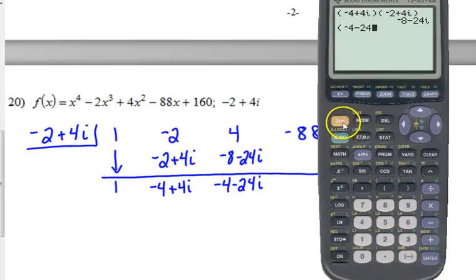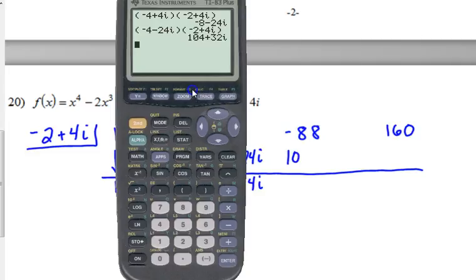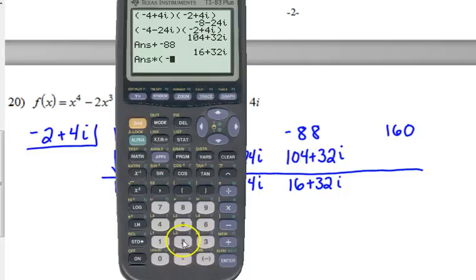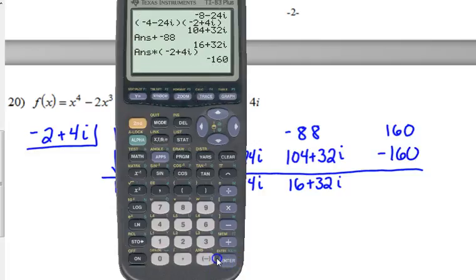So same deal. Use your calculator. Numbers are getting a little bit, but that's okay. 104 plus 32i. Add negative 88. Your calculator will do that part for you too. Multiply. Look at there. The i's cancel all of a sudden. Properties of imaginary numbers. Math is a wonderful thing.